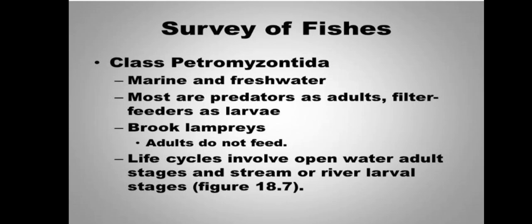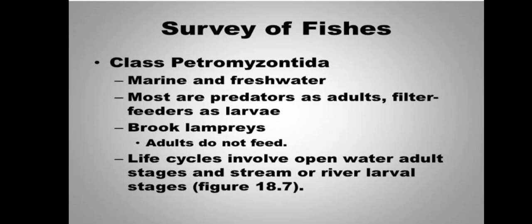When they are in adult condition, they act as predators, but when they are in larval condition, they are filter feeders and do not act as predators. An example is the brook lamprey, which as an adult does not feed — it does not use its digestive system. They only feed in the larval condition. They occupy both marine and freshwater environments according to their life cycle.